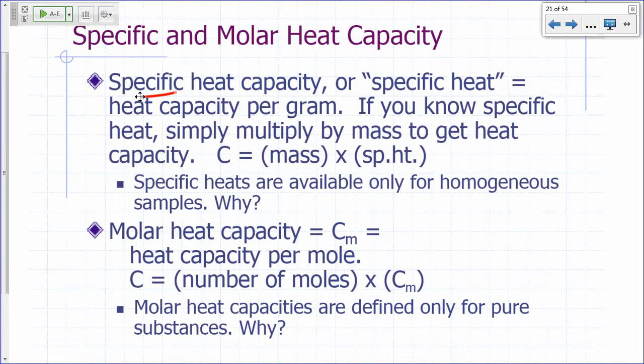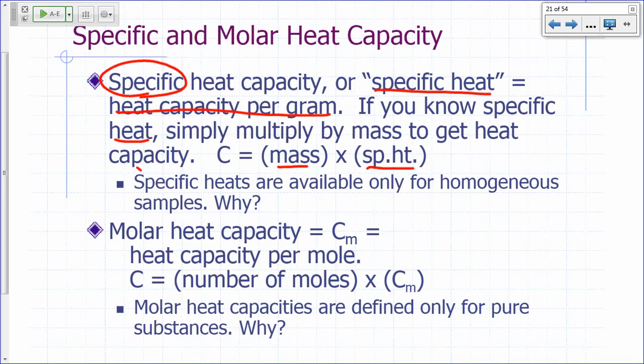Specific heat and molar heat capacity. Specific heat - any time you put the word specific in front of a quantity, that typically means per gram. So specific heat capacity means heat capacity per gram, often just shortened to specific heat. If you know the specific heat, all you have to do is multiply that by the actual mass in grams to get the heat capacity. So specific heat times the mass would give you the heat capacity.